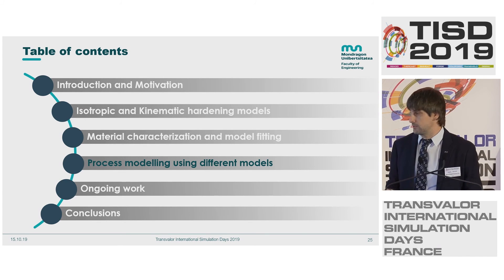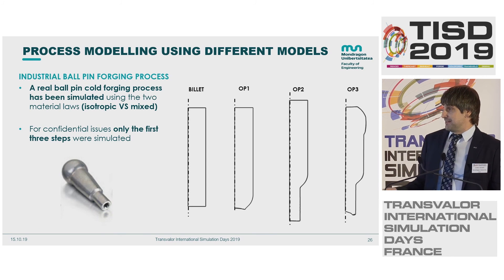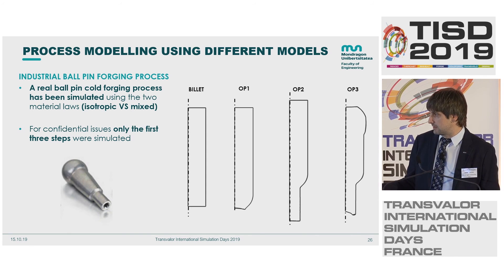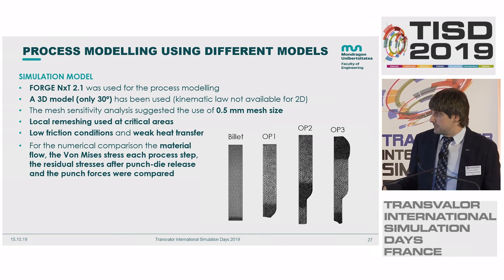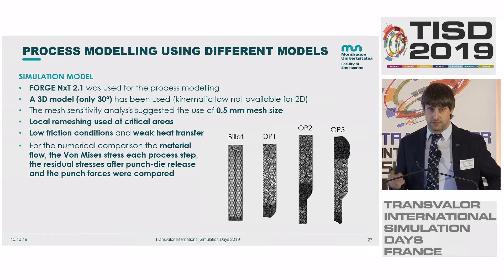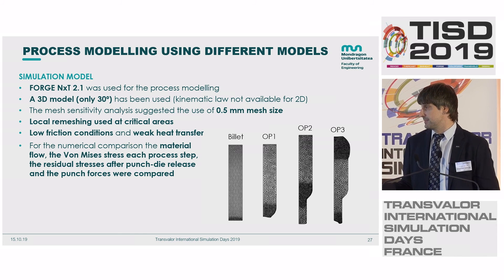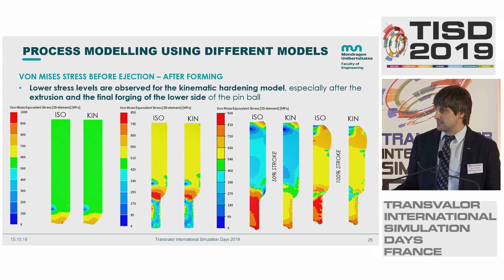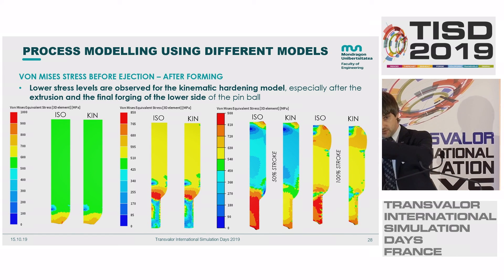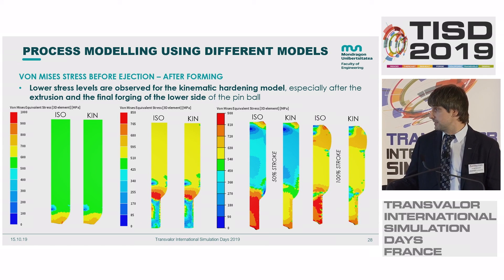Now for the simulations: the ball pin involves three steps — a billet operation, pointing, then backward extrusion and upsetting. We performed mesh sensitivity analysis with local refinement as needed, used only 30 degrees of the geometry for computational efficiency, in a 3D model. The von Mises stress is slightly higher in isotropic, but where there is an extrusion followed by compression — a big change in strain path — there is a clear influence on stresses.